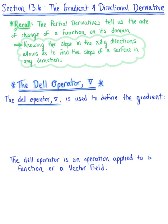In section 13.6, we are exploring the directional derivative and the gradient. Before we begin, recall that the partial derivatives of a function tell us the rate of change of the function on its domain in specific directions. Knowing the slope in the x and y directions allows us to find the slope of a surface in any direction, and this is the story behind the directional derivative.